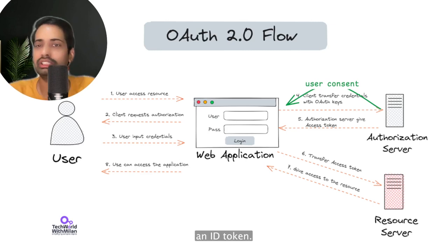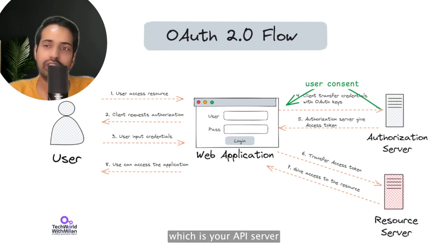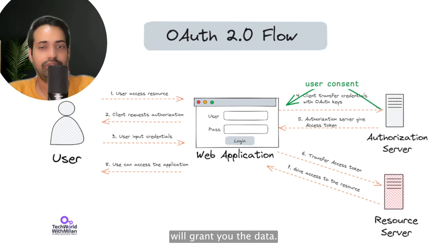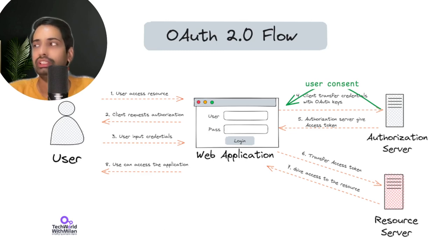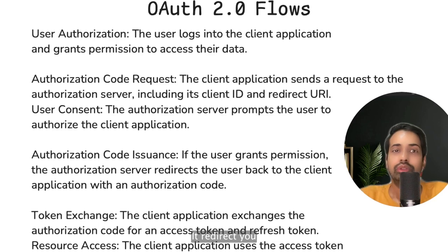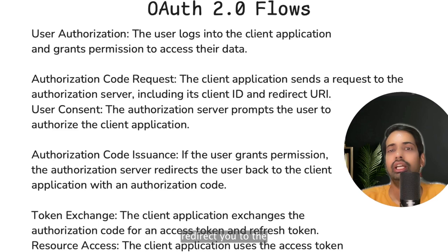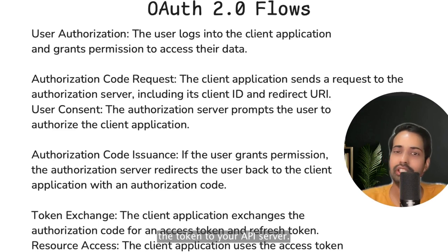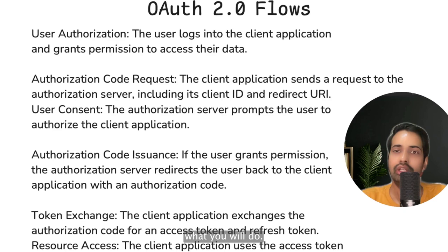Auth0, which is the authorization server, validates your credentials and gives you an access token and ID token. You then start passing the access token to the resource server — your API server or any server with protected information — and the resource server grants you the data. So the user logs into the client application, is presented a login screen. You configure the client ID in your React app, click login, and it redirects you to the Auth0 login screen. You enter credentials; if the user grants permission, the authorization server redirects you back to your client app passing the authorization code, access token, and ID token. You then send the token to your API server, which validates it against Auth0 to confirm it's valid before allowing access.